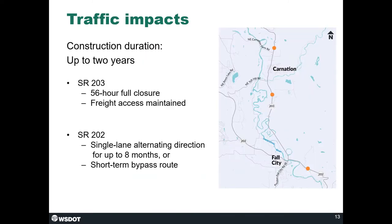Regarding traffic impacts — and these are not finalized options — on SR203, the unnamed tributaries to Horseshoe Lake and the Snoqualmie River may require a complete closure of the highway for 56 hours, about two and a half days. Construction techniques proposed by a design-builder could result in fewer lane reductions and road closures, but this is based on what we know right now.